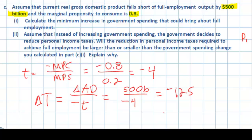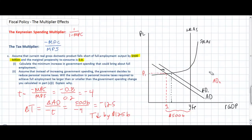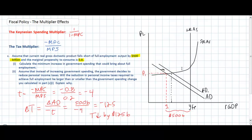This tells us that taxes must fall by 125 billion dollars. Notice that the 100 billion dollar increase in government spending could bring about a 500 billion dollar increase in aggregate demand, but a 125 billion dollar tax cut is needed to achieve the same result. This is because a tax cut is an indirect injection into the economy. Due to the MPC of 0.8, a 125 billion dollar tax cut will actually only lead to an increase in consumption of 100 billion dollars, since 20 percent of that tax cut goes towards savings.